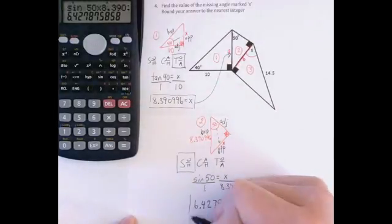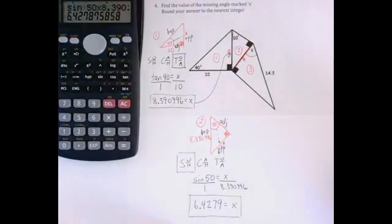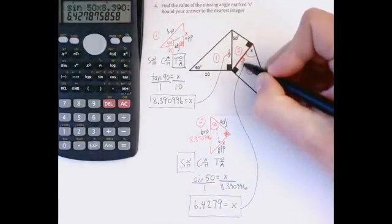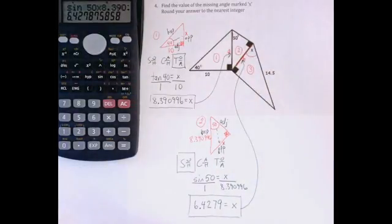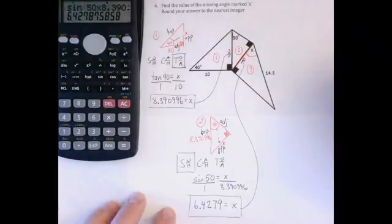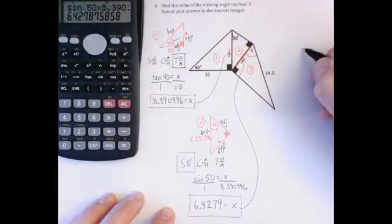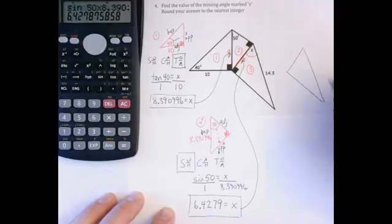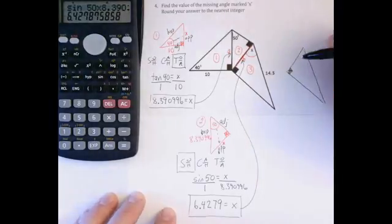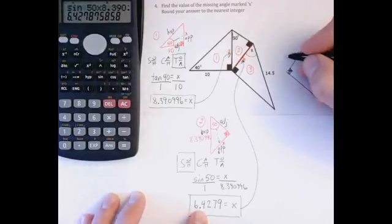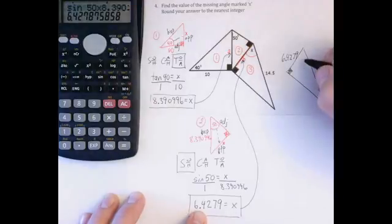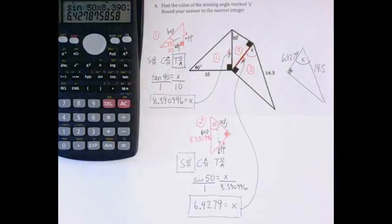So now I have the side length that I needed to be able to move over and work in this third triangle here. So now my third triangle, if I redraw that, it looks like this. This side is the one I just found, 6.4279. The angle is what I need, and 14.5 is given in the question.